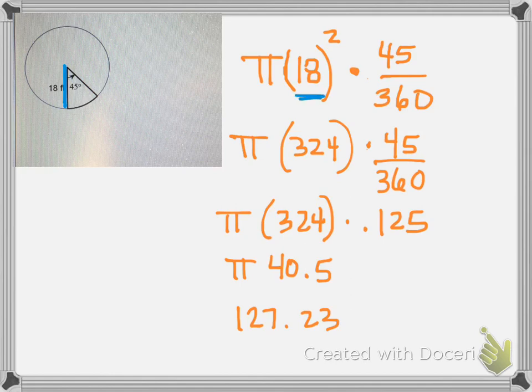So I just plug radius in. I square it. This is 18 squared. And then I put the angle 45 degrees over 360.